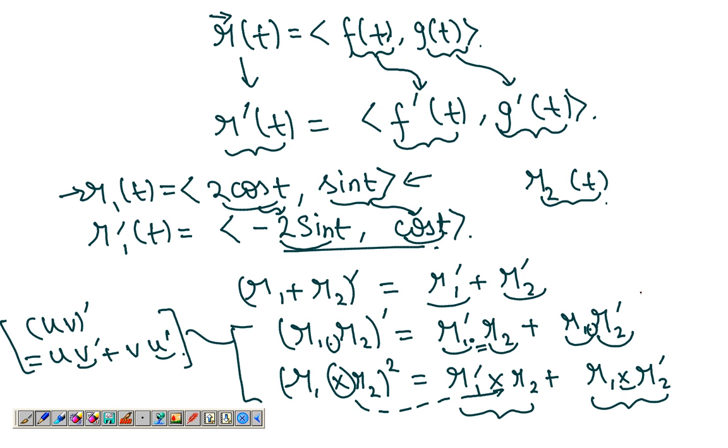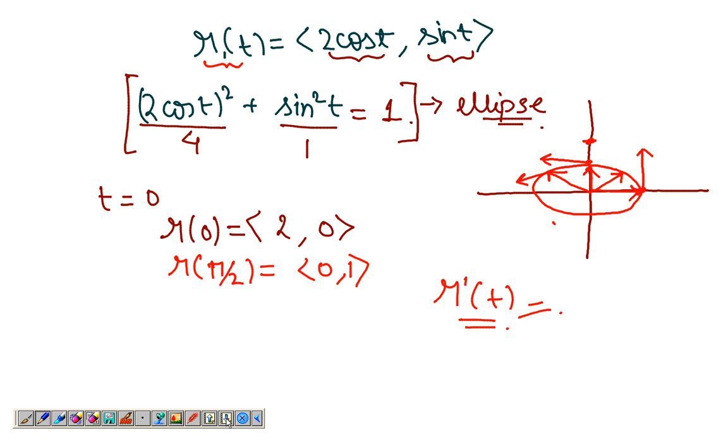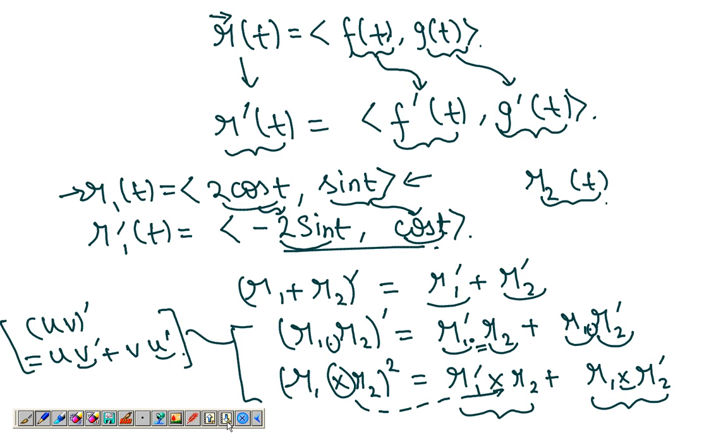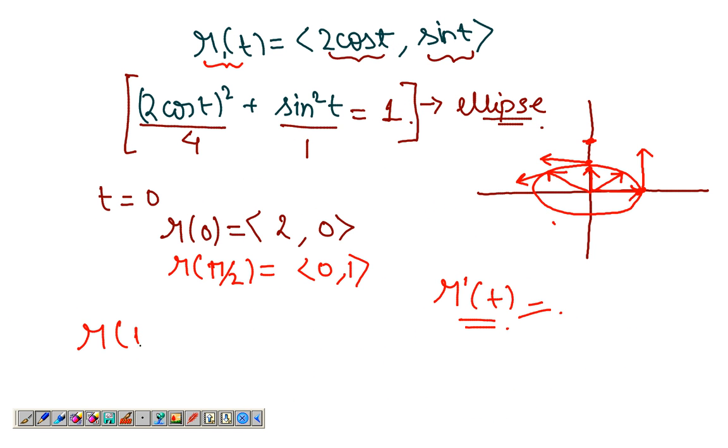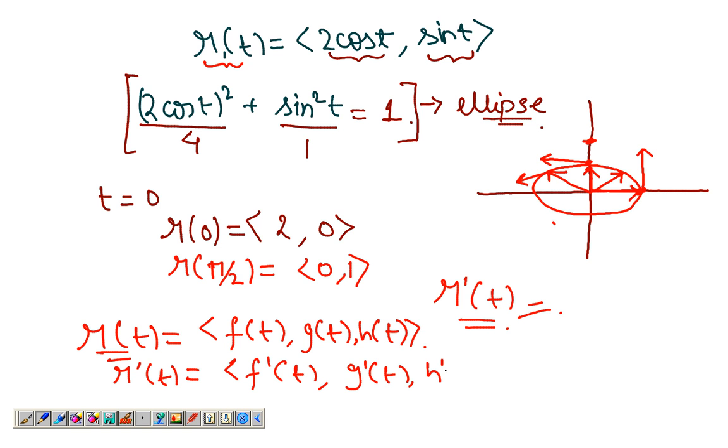And those are the rules of differentiating vector functions. That's how you find out the derivative of a vector function. In case you have, let's say you have r(t) being equal to f(t), g(t), h(t). Again, if you want to find out the derivative, you differentiate independently. f'(t), g'(t), h'(t).